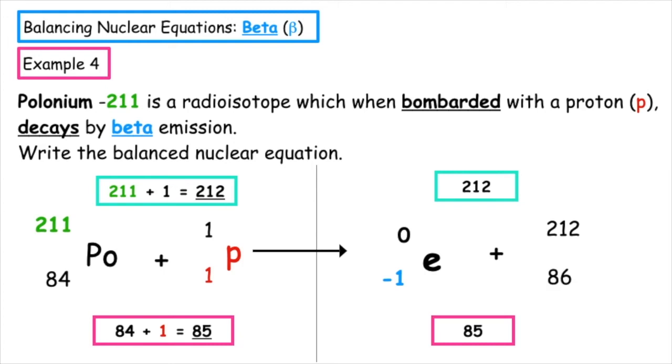That gives us an atomic number of 86. Looking up element 86 in the periodic table, we get radon, which has the chemical symbol Rn.